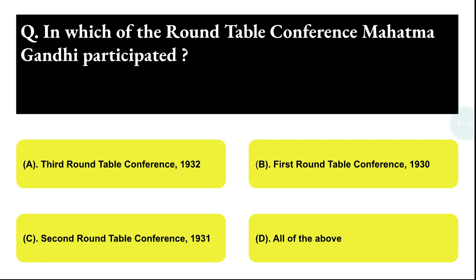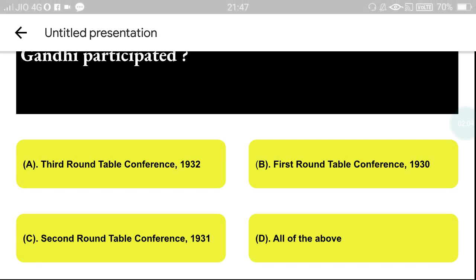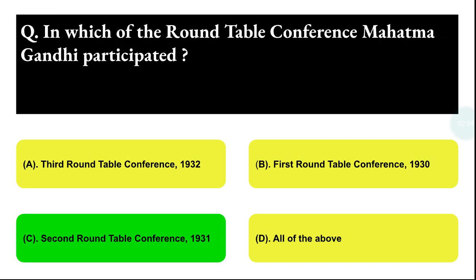Next question: in which of the Round Table Conferences did Mahatma Gandhi participate? Option A: Third Round Table Conference 1932, Option B: First Round Table Conference 1930, Option C: Second Round Table Conference 1931, Option D: All of the above. The correct answer is option C, that is the Second Round Table Conference 1931.